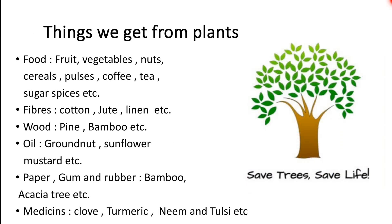Things we get from plants: we get food from fruit, vegetables, nuts, cereal, pulses, coffee, tea, sugar, spices, etc.